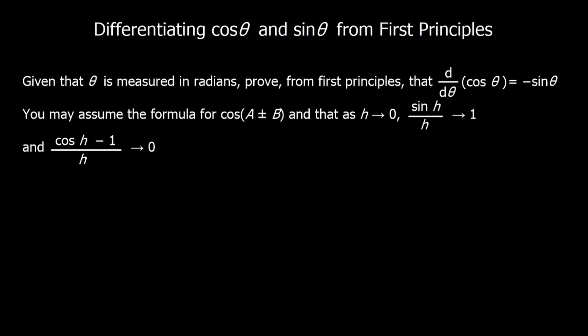In this video we're going to be differentiating cos theta and sine theta from first principles. We're going to do two questions: the first one with cos theta and the second one with sine theta. Given that theta is measured in radians, prove from first principles that cos theta differentiated is minus sine theta.